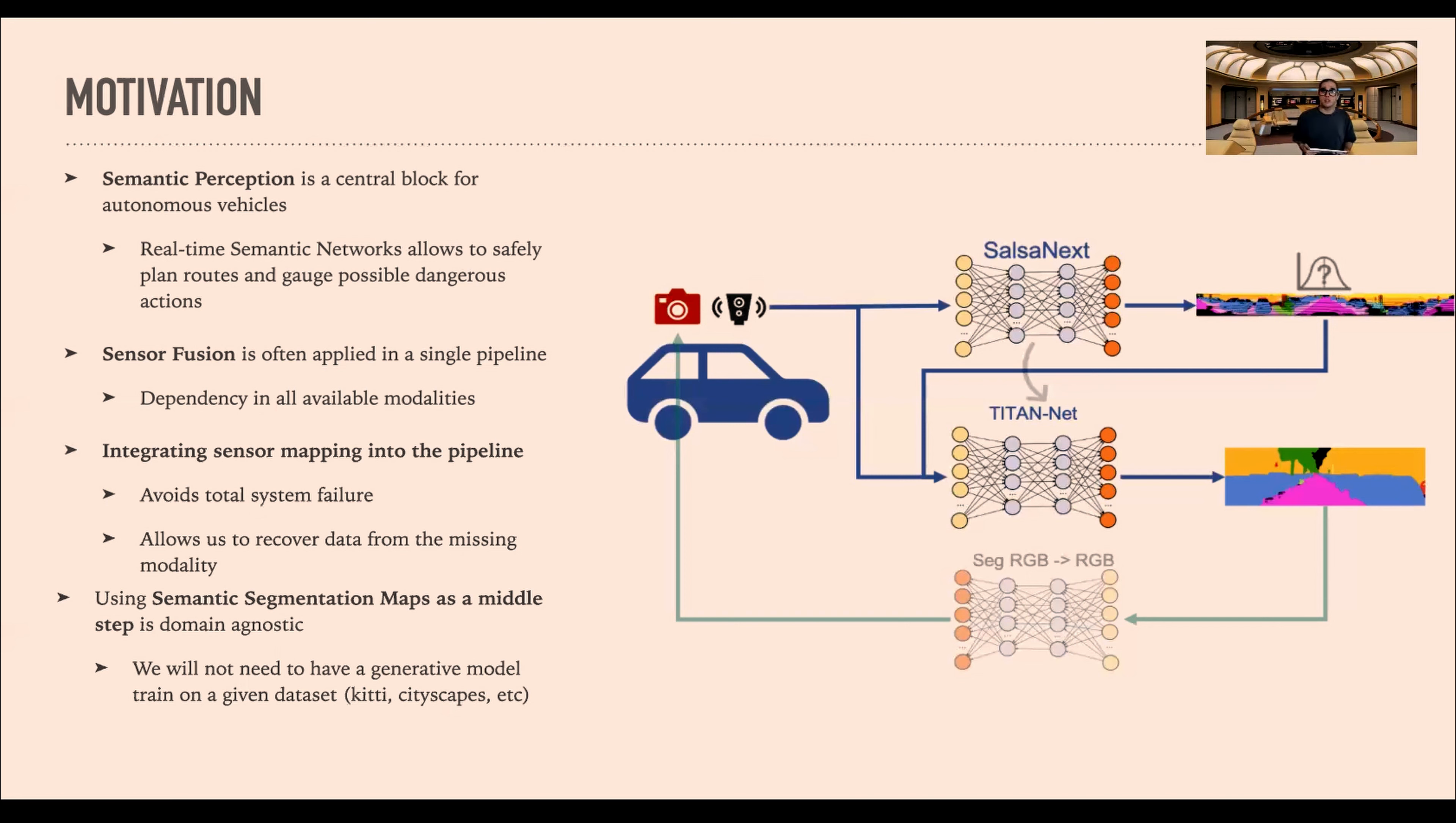Another motivation is, instead of trying to recover directly the RGB, we try to recover first the semantic maps. This is because if you are training a network to recover real images, those images will be coming from the same distribution of the dataset, so it will be domain dependent. We want to avoid that by recovering a higher representation structure, the semantic segmentation maps. Those are the main motivators behind our current work.